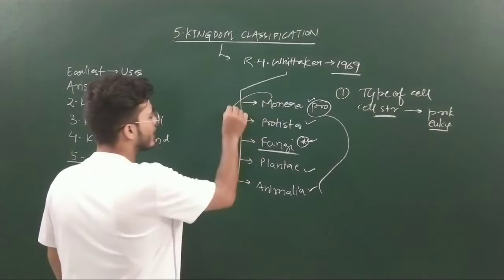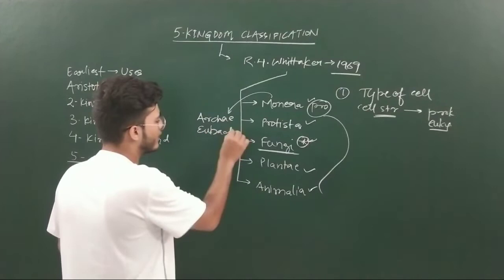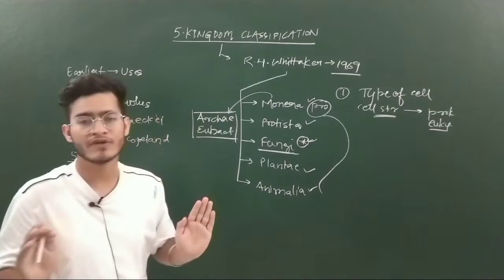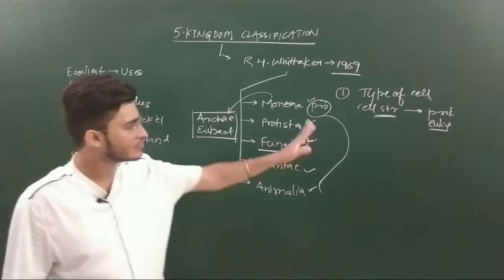In Monera you have Archaebacteria and Eubacteria. We know very well that these bacteria are prokaryotic in nature - they don't have a well-defined nucleus. Monera was the most primitive kingdom without a well-defined nucleus, so it is prokaryotic. All the rest are eukaryotic organisms.